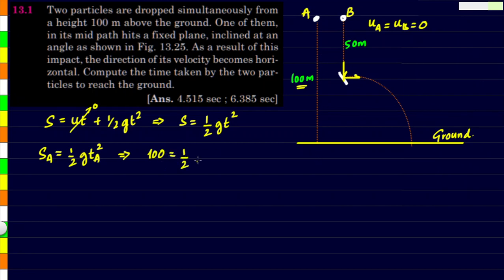This equals 1/2 × 9.81 × tA². We'll be able to find tA, so tA will be the square root of 2 × 100 divided by 9.81.